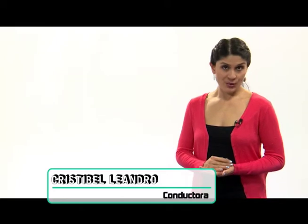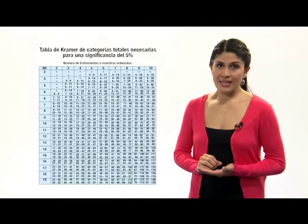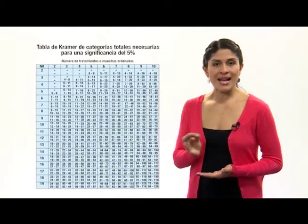Como pudimos ver, esta es una prueba muy fácil y rápida. Eso sí, es muy importante llevarla a cabo con rigurosidad y procurar un buen análisis de los datos obtenidos. Para esto se recomienda utilizar la tabla de Cramer de categorías totales para una significancia al 5%. Además, los comentarios de los jueces pueden brindar información puntual sobre las características más o menos deseables del producto. Al finalizar la prueba se recomienda dar una muestra de agradecimiento a los jueces por su valioso trabajo.